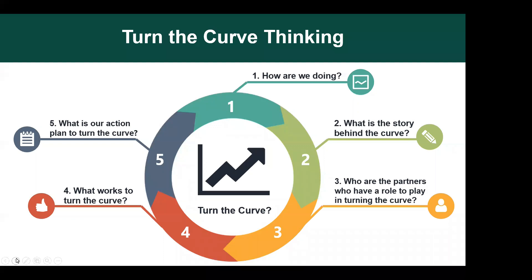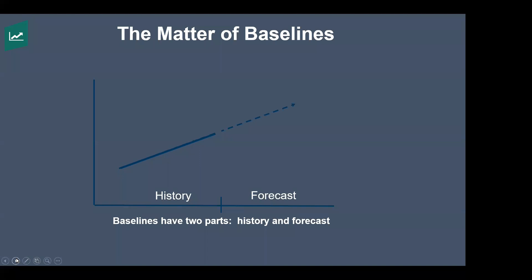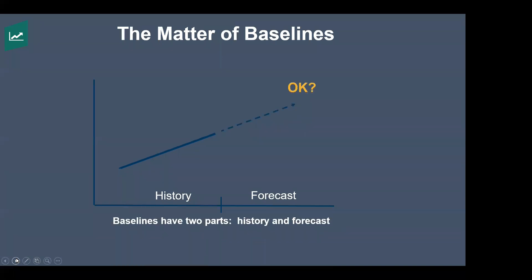Turn the curve thinking — how do we use that data effectively? Many people are not very good at looking at spreadsheets full of cells and data, so the most effective way is looking at data in a trend line. We have the trend line with history and a forecast. If this is the high school dropout rate, we can assume if we do nothing, it will continue to go up. Then we ask a simple question: is that okay? If more kids drop out, is that okay? Of course we say a resounding no. So what we want to do is turn the curve — if it's going the wrong way, turn it the right way; if it's going the right way, accelerate it. It's always about turning the curve.